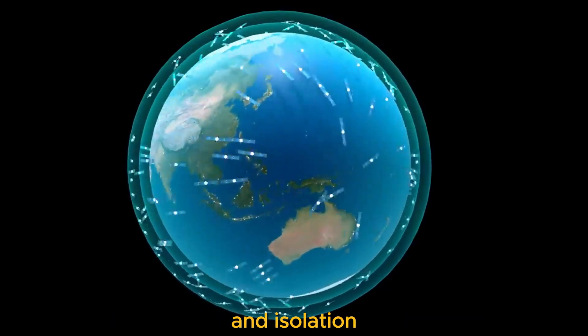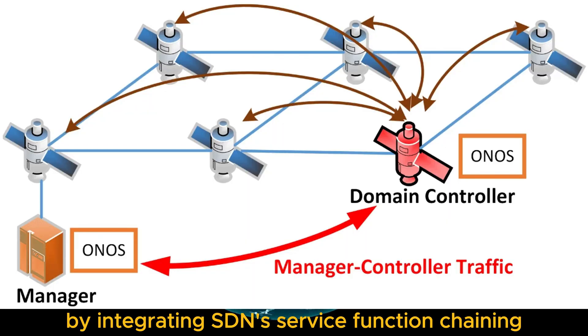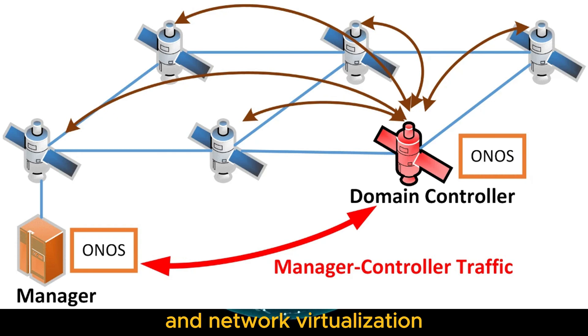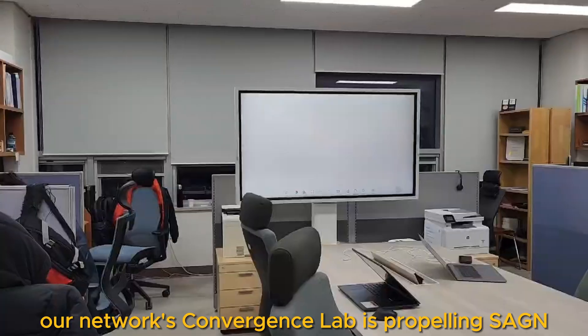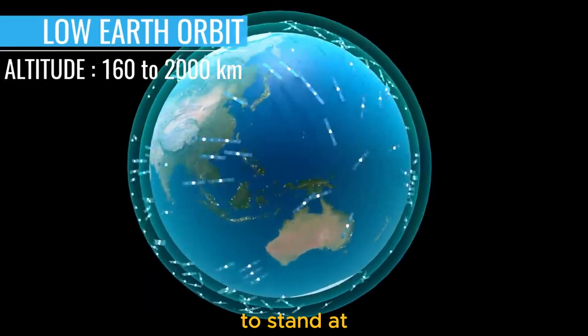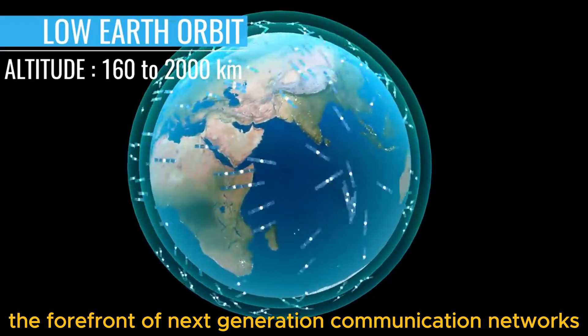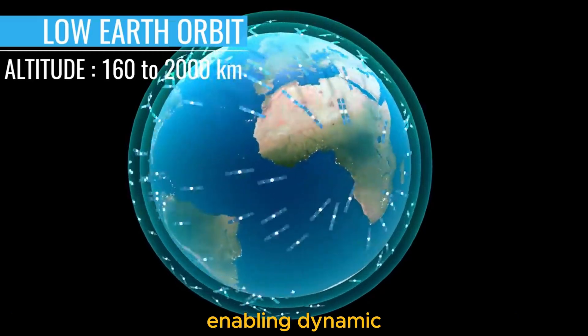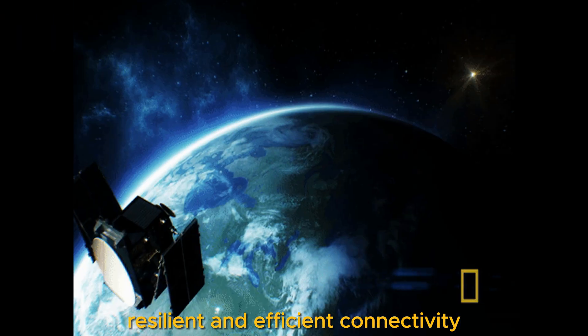By integrating SDN, service function chaining, and network virtualization, our network's convergence lab is propelling SAGIN to stand at the forefront of next-generation communication networks, enabling dynamic, resilient, and efficient connectivity across diverse environments.